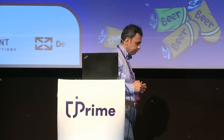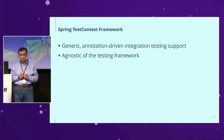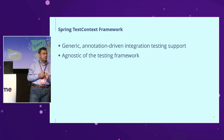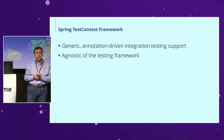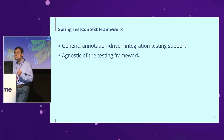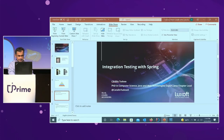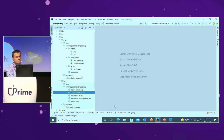It's also about Spring. We are going to use the Spring Test Context Framework. It's generic, annotation-driven integration testing support, meaning it does not care about the testing framework — it is agnostic of the testing framework. We chose JUnit 5, which is the most recent of the most popular unit testing frameworks. I prepared here for our demonstrations some applications that we are going to introduce.